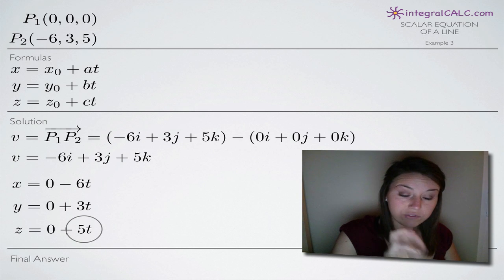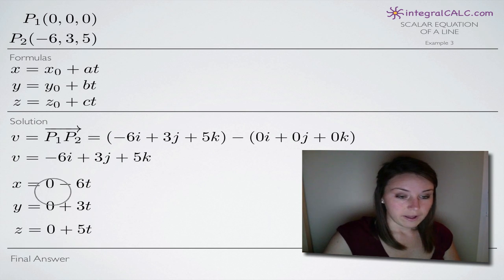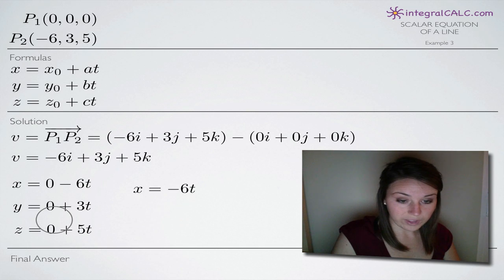So once you set up those three equations, if they're simplified as much as they can be, then you're done. In this case, it's redundant to have the three zeros here as terms in these equations. So we'll take those out and we'll get x = -6t, y = 3t, and z = 5t.